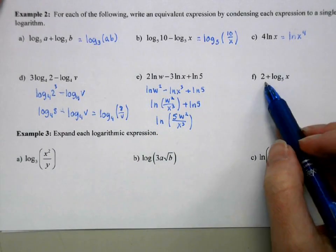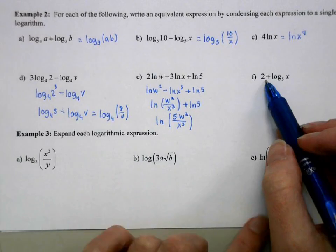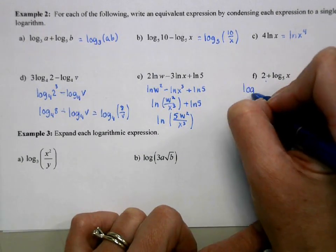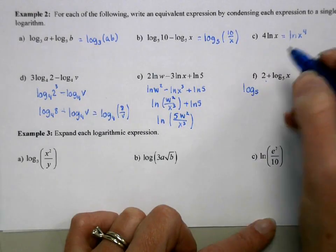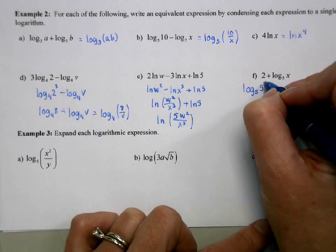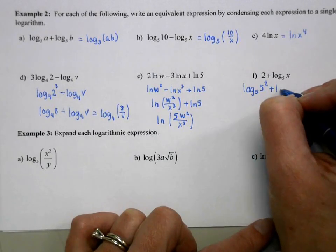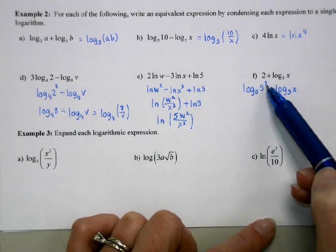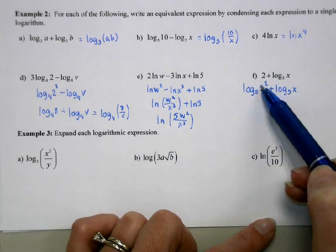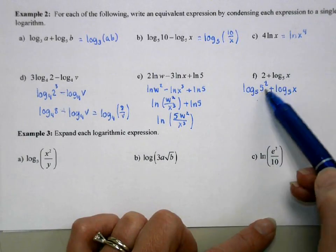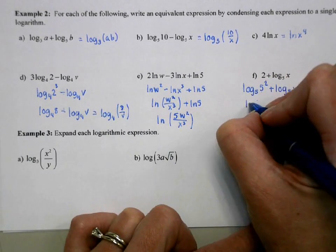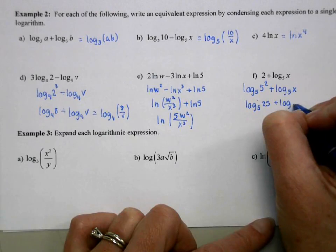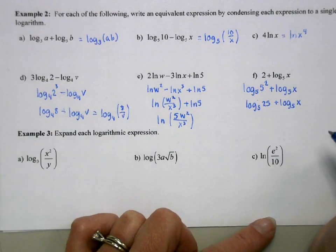This one, I don't have a log here. So we need to think about how to change that. And one simple way to do that is just use that inverse property. Okay, where I can rewrite 2 as log base 5 of 5 to the 2, I know this simplifies to 2. Now this I can rewrite as 25, and then I can combine them with our product property.